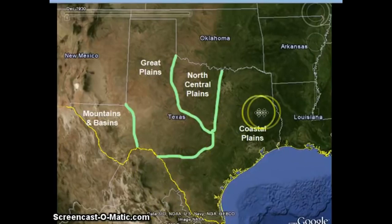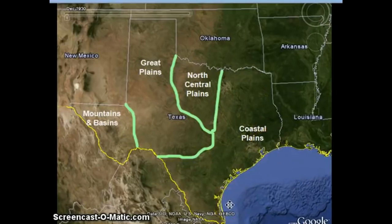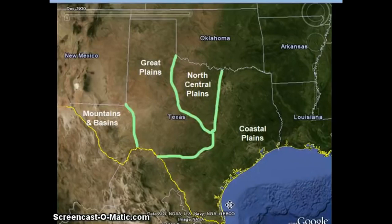The area furthest to the east is the coastal plains. This is the region in which most people in Texas live. This is where our major cities are. People live in this area because it has the most vegetation, which can be used for farming to grow food, and the greatest amount of rain.